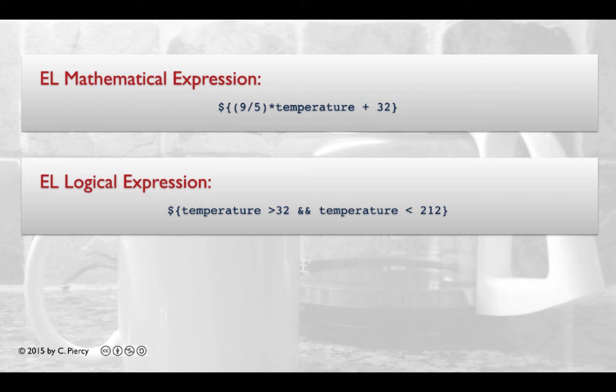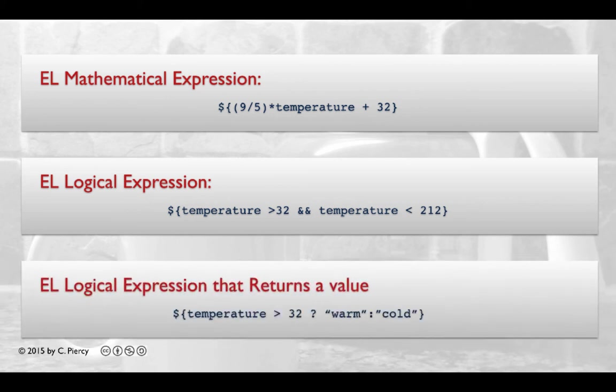Now if I want to use a condition to return a different value, I would need to use an expression like this. Here, the condition, is temperature greater than 32, is evaluated. If it is, for example, temperature is 60, it's going to return a value of warm, and the word warm would appear on the page.